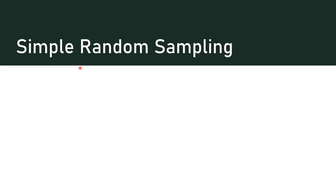Simple random sampling is a basic sampling technique in which each of the individuals or observations in the population has an equal chance of being selected for the sample.